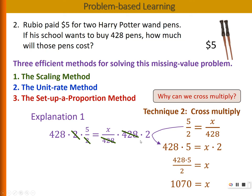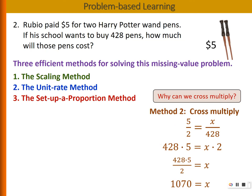And the second method is to make the two denominators have a common denominator. So at the moment, one has a 2, the other one has a 428. So how could I make them have the same denominator? I could actually multiply